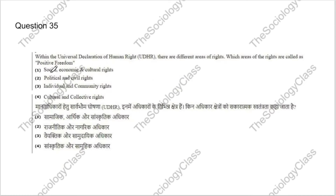Question 35: Within the Universal Declaration of Human Rights, which areas of rights are called positive freedom? Options: Social, Economic and Cultural Rights; Political and Civil Rights; Individual and Community Rights; or Cultural and Collective Rights. The correct answer is A — Social, Economic and Cultural Rights are classified as positive freedom.